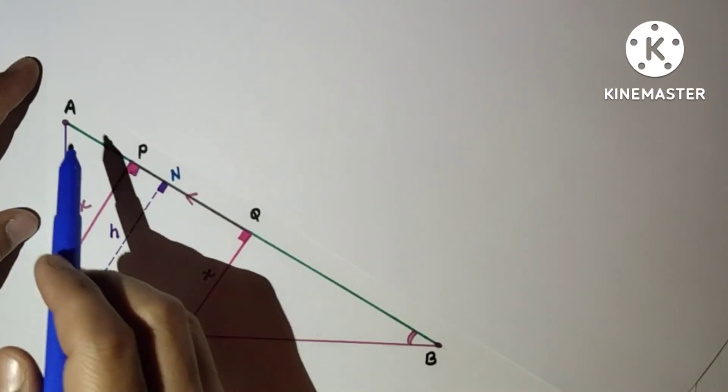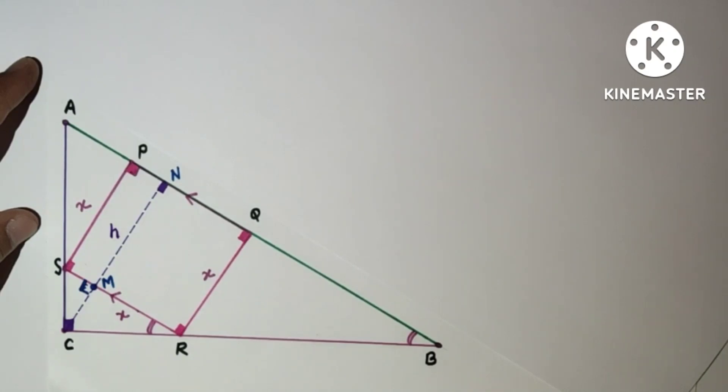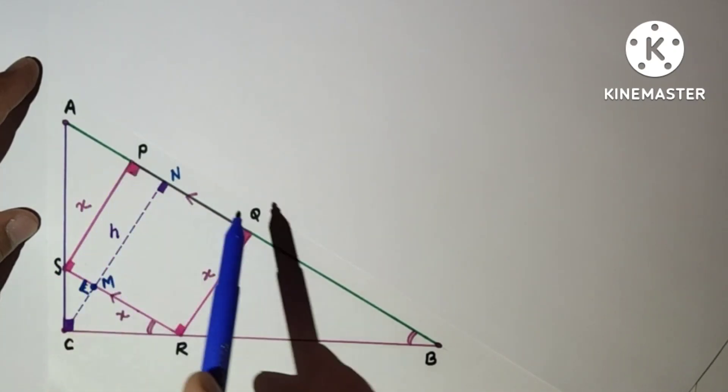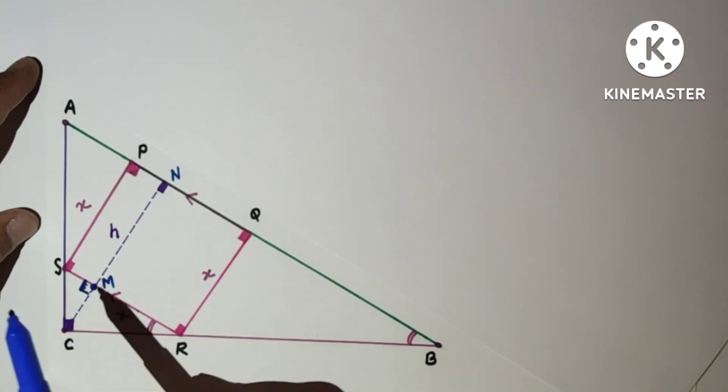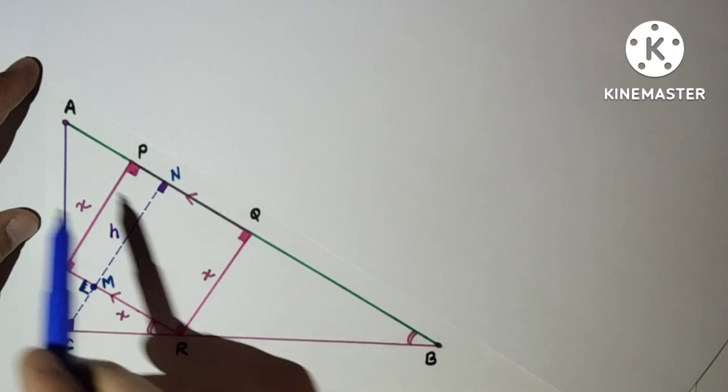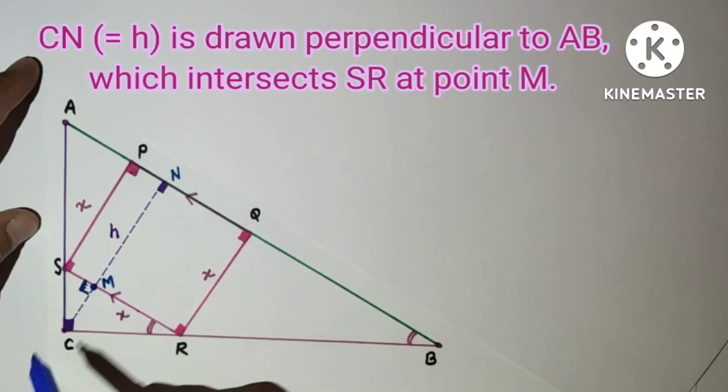Here is the diagram: ACB is a right angle triangle with right angle at C. Let us suppose each side of the square is x units. The distance from C to AB is h. Let this line intersect SR at M.